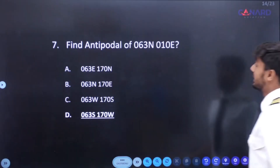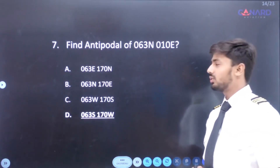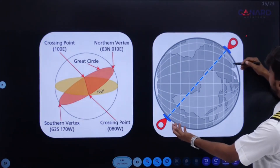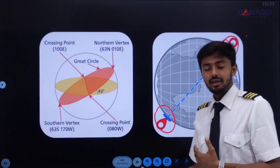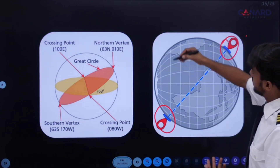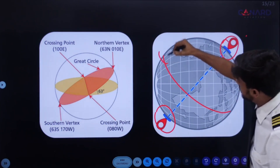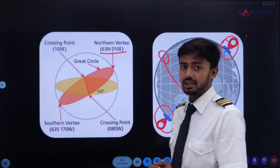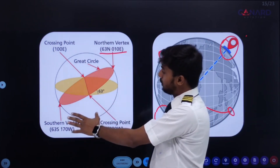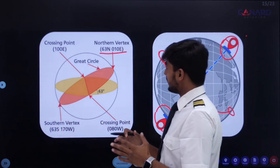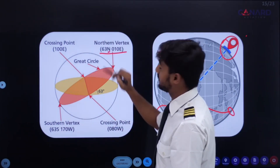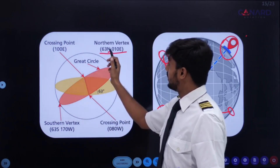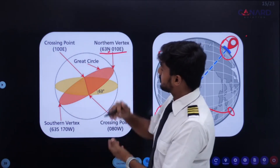Next question: find the antipodal of 063 north and 010 east. Antipodal points are diametrically opposite points. For this particular point, the antipodal will be 063 south and 170 west. This point is in the northern hemisphere, so its antipodal will obviously be in the southern hemisphere. So 063 north — the antipodal latitude will be 063 south.